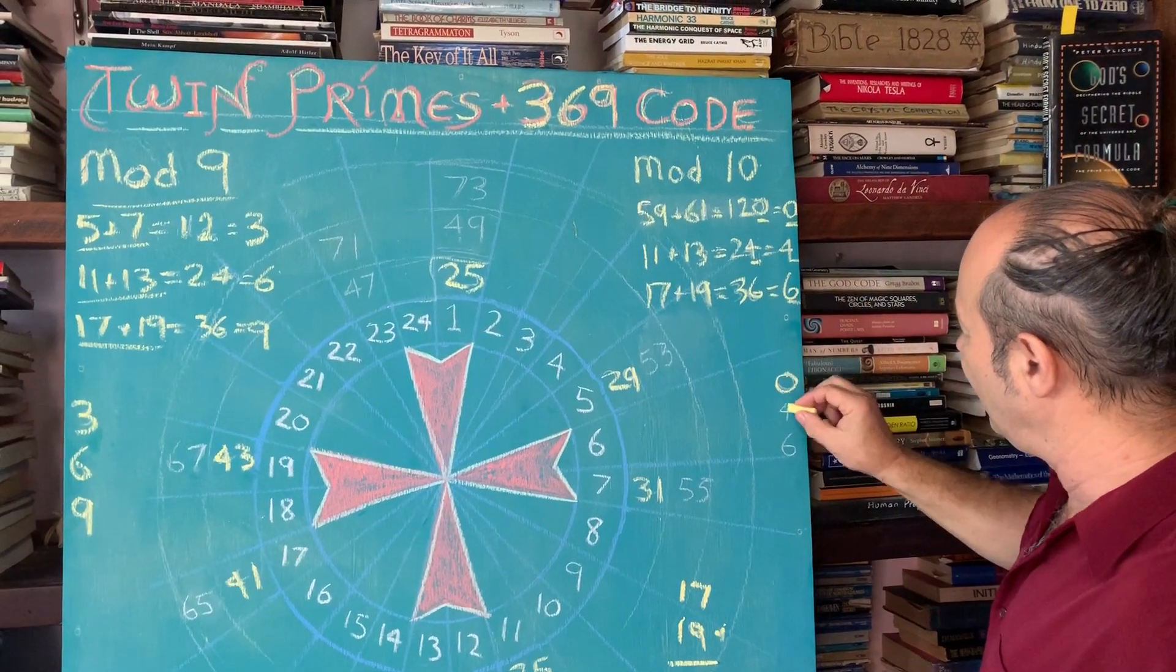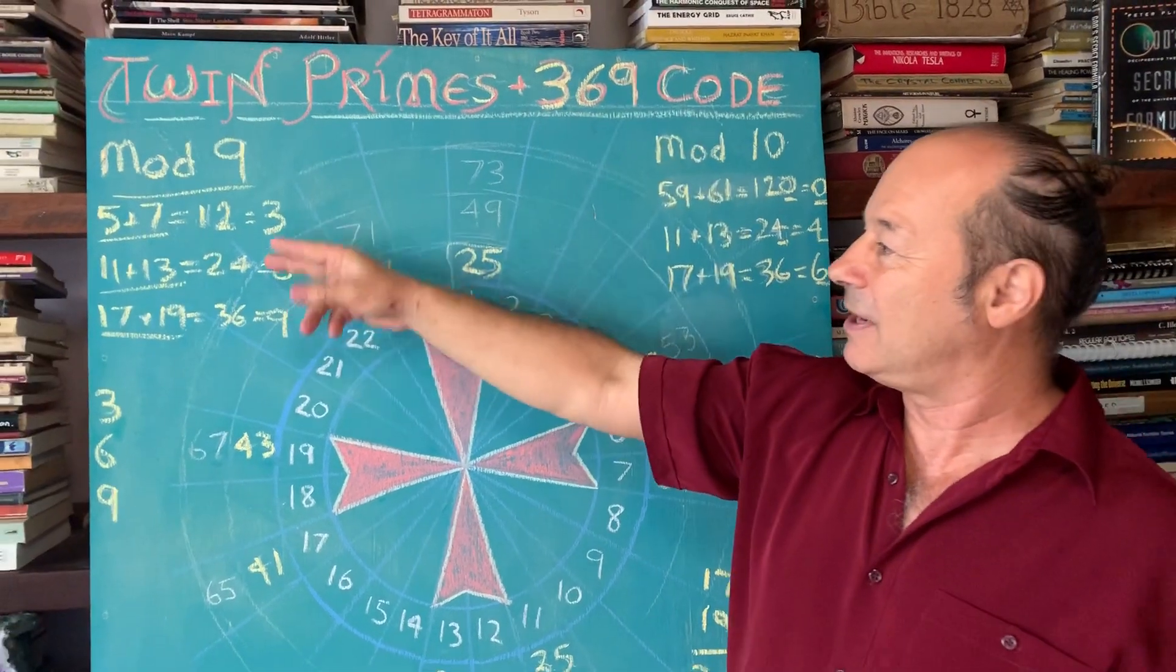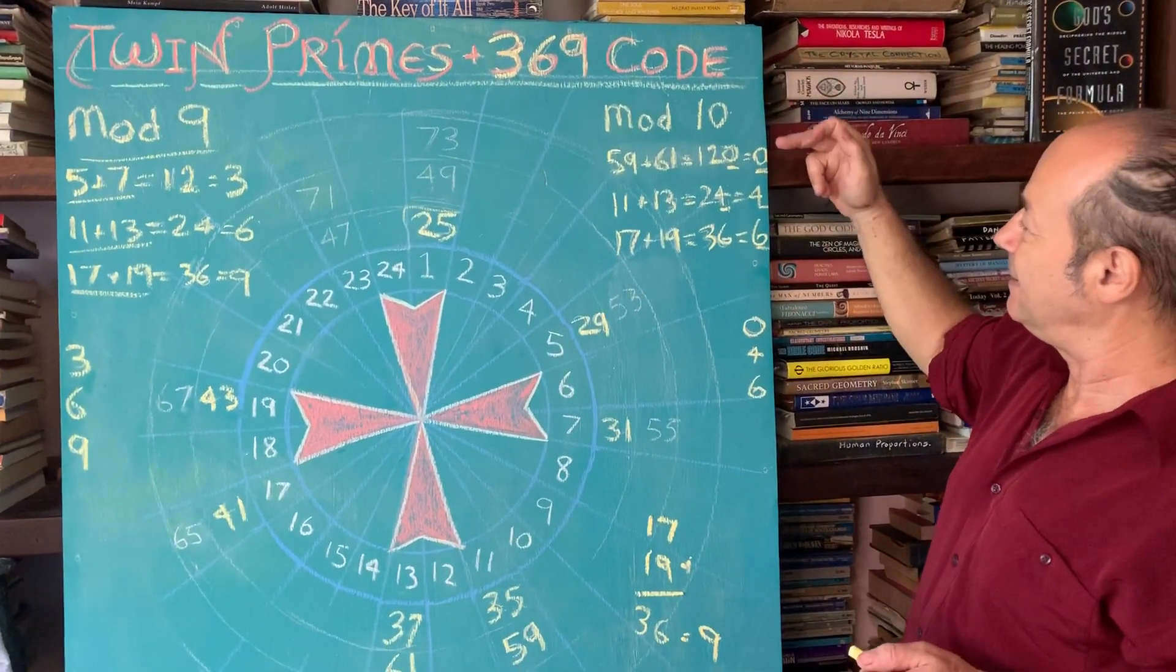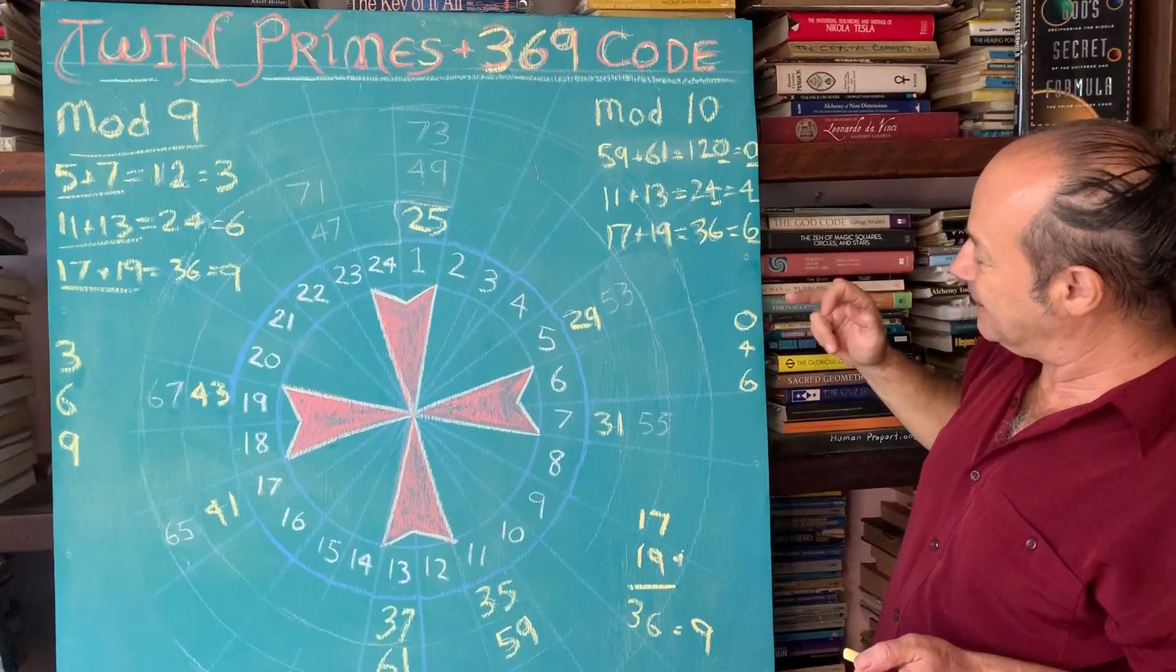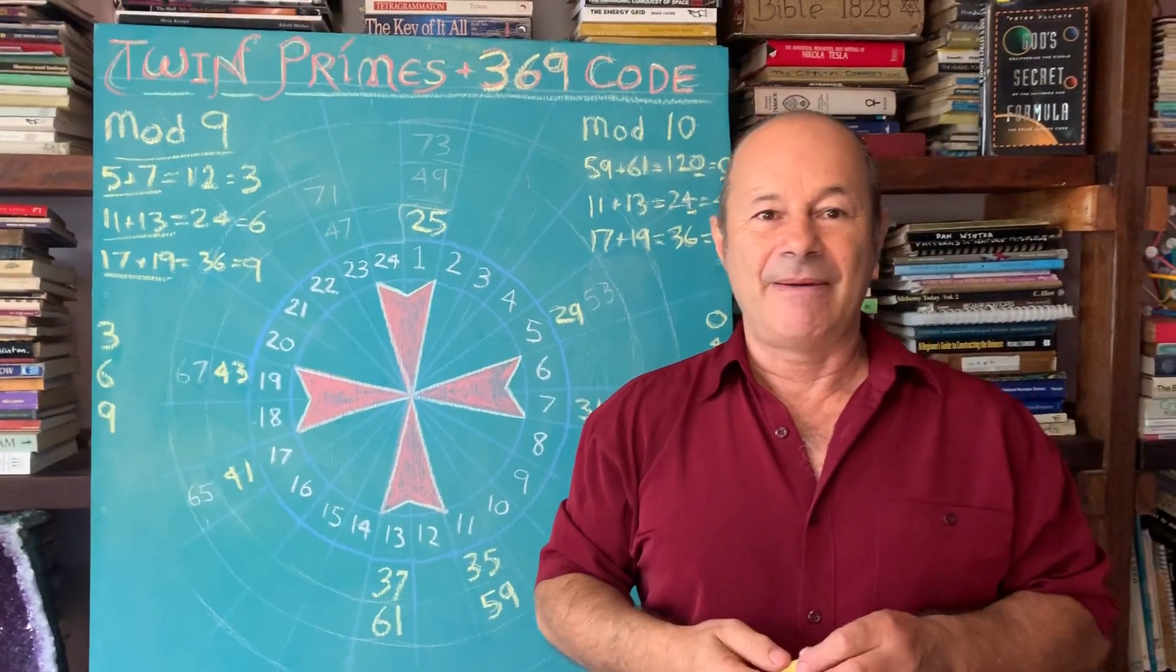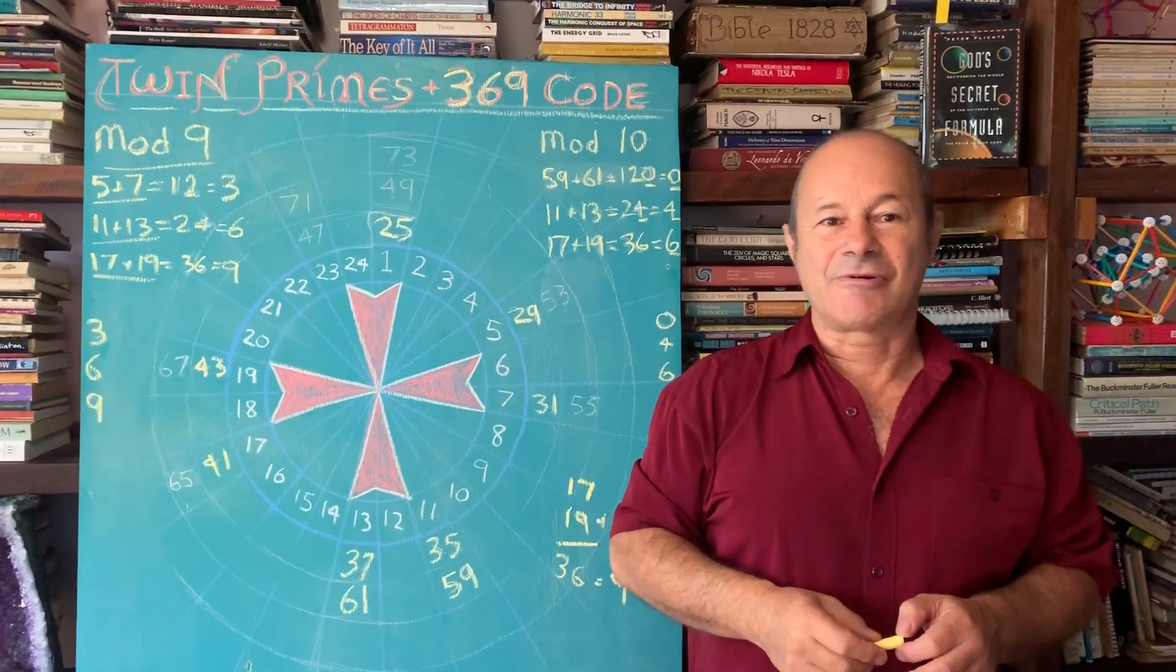So if we're looking for infinite twin primes, we've got two tools. We take away 9, it can only be a 3, 6, or 9. Or we take away 10 and a twin prime can only end in a 0, 4, or 6. So these are unpublished facts and gems about twin primes, which I think is essential for cracking this code.